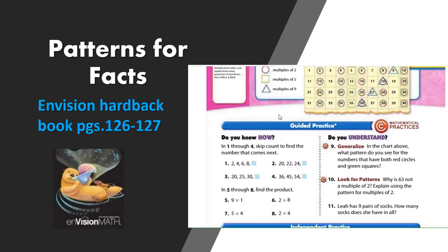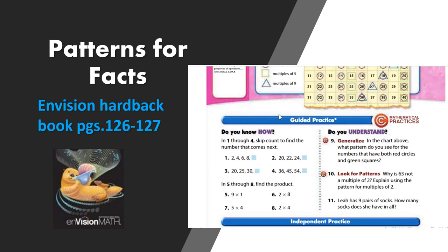On number 10, it says look for patterns. Why is 63 not a multiple of two? And explain using the pattern for multiples of two. So make sure to rewrite part of your question into your answer, which would be 63 is not a multiple of two because or 63. So you would answer that and then make sure that you explain why it's not a multiple of two.